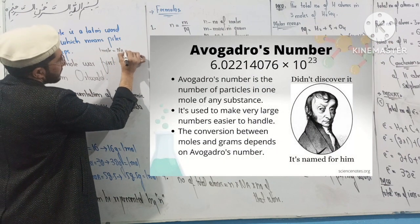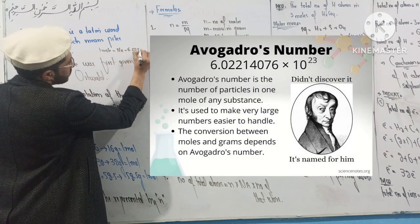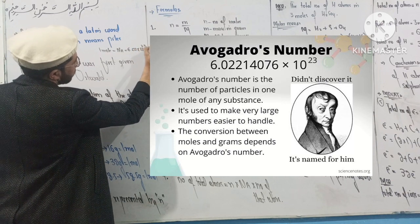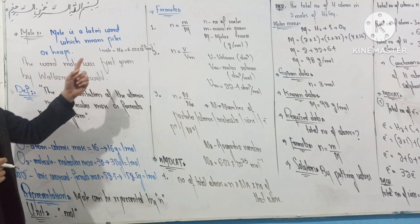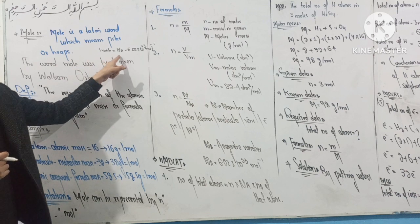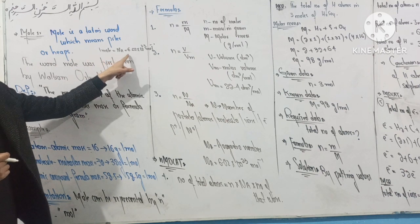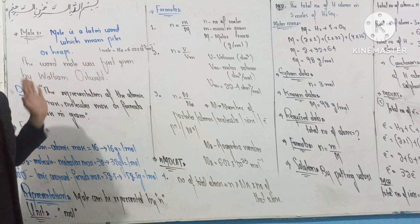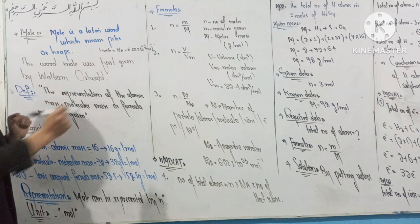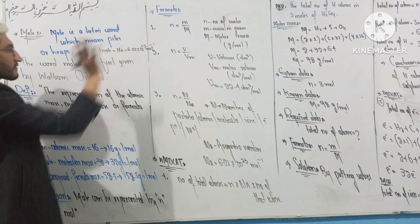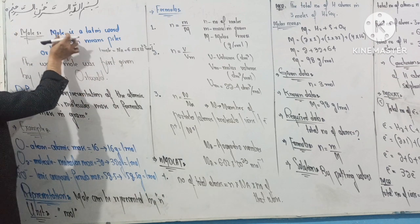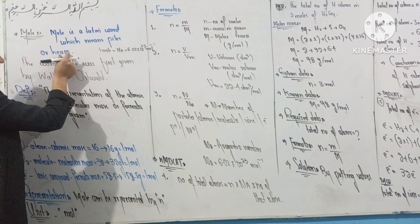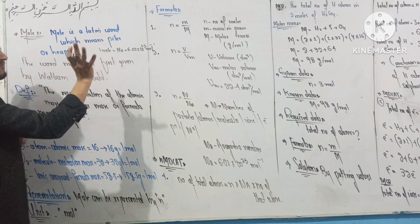The number of particles in one mole of a substance is 6.02 × 10²³. This specific number of particles is the number of particles in one mole of any substance. The name for this specific number of particles relates to the concept of files or heaps.